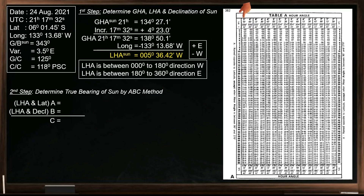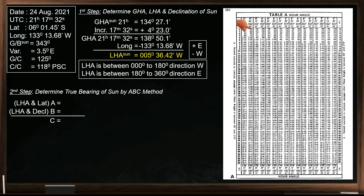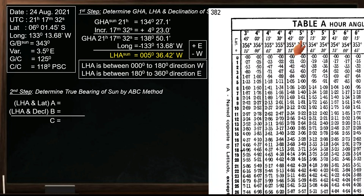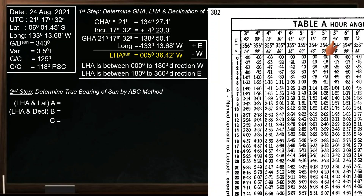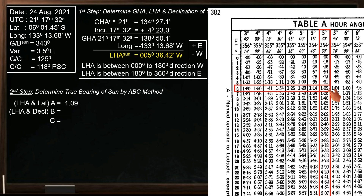Just find the value of LHA in table A. Let's zoom in. In this case we do not have the exact value of the hour angle, so we are supposed to do linear or bilinear interpolation, but to make this video shorter we will just take the nearest values. The nearest hour angle is 5 degrees 30 minutes, and the nearest latitude is 6 degrees. The value of A is 1.09.